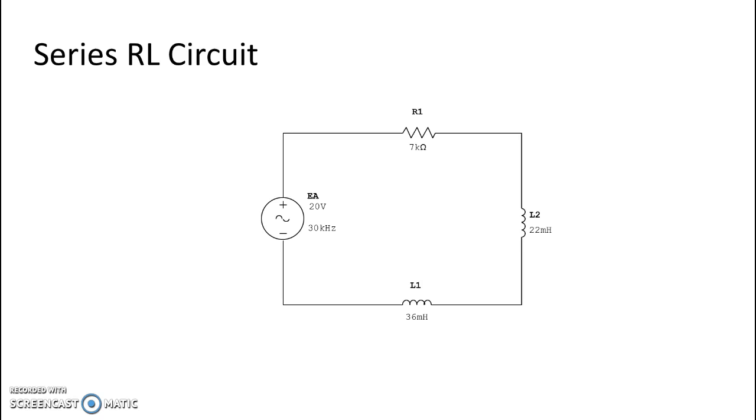We will need to convert the two inductors into ohmic values. We use the inductive reactance formula which takes 2 pi multiplied by frequency and then multiplied by inductance. We throw all of our numbers in there for this particular component: 2 pi times 30,000 which is our frequency times 36 milli which is our henries and we get a total ohmic value for L1 of 6.78k ohms.